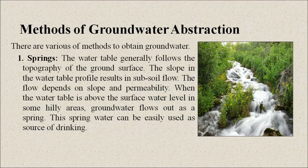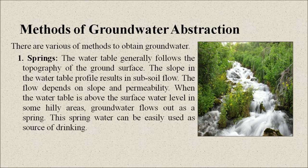Now let us come to the methods of groundwater extraction. There are various ways to obtain groundwater. The first is a spring. The water table generally follows the topography of the ground surface, and the slope in the water table profile results in subsoil flow. The flow depends on slope and permeability. When the water table rises above the surface in some hilly areas, groundwater flows out as a spring. This spring water can easily be used as a source of drinking water.